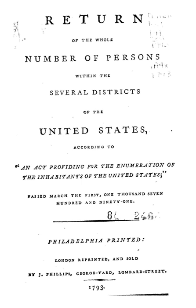The 1980 Census added several options to the race question, including Vietnamese, Indian, Guamanian, Samoan, and re-added Aleut. Again, the term 'Color' was removed from the racial question, and the following questions were asked of a sample of respondents: state or foreign country of birth, whether born in a foreign country and naturalized, when they came to the U.S. to stay, whether they speak a language other than English at home, what language, how well they speak English, and what their ancestry is.